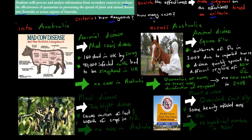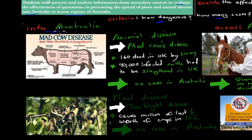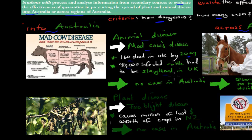Using those criteria, we can make our own judgment based on facts. We need to talk about animal and plant diseases into Australia and across Australia. An example of something being prevented from coming into Australia is BSE — the cow disease — which is a form of animal disease. In the UK, 160 people had died by 2009, and 40,000 infected cattle had to be slaughtered. Using our criteria, it's very dangerous in the UK, but it's not dangerous in Australia because there are no cases.